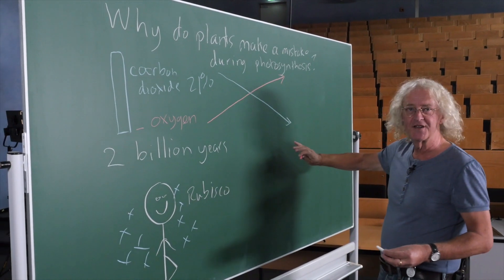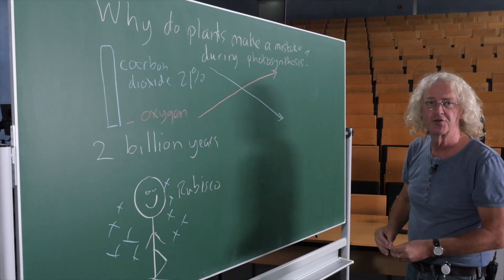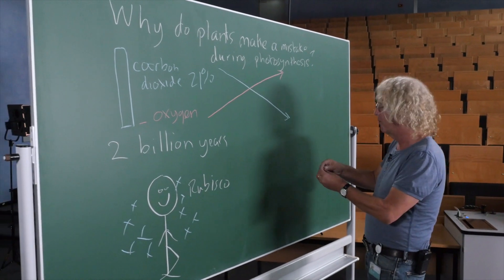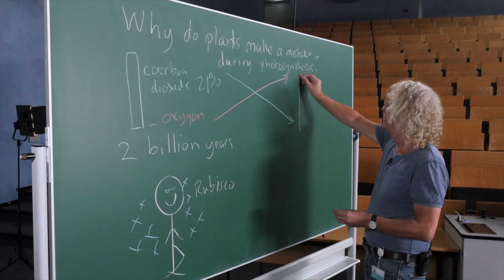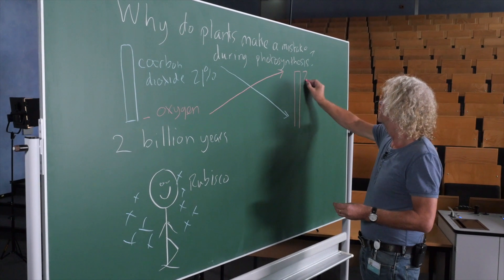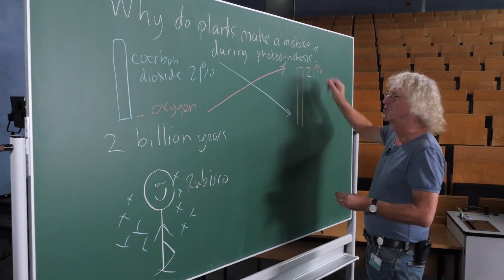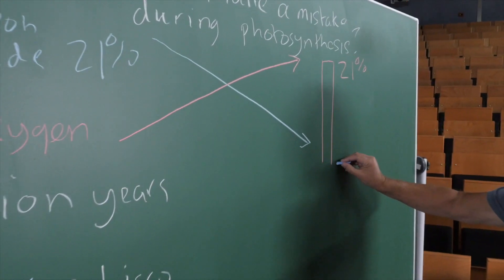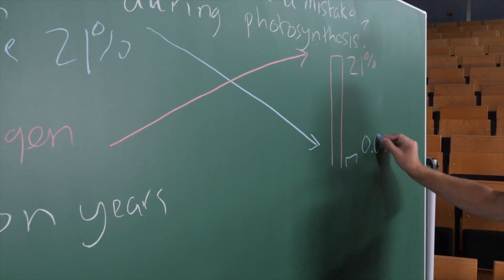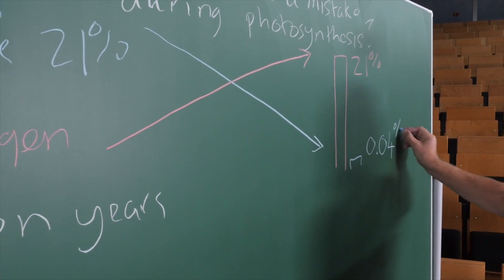It was a little bit more complicated than this, and there were also changes due to volcanoes, but they changed a lot. And what we have today is a lot of oxygen, about 21%, and not very much carbon dioxide, about 0.04%.